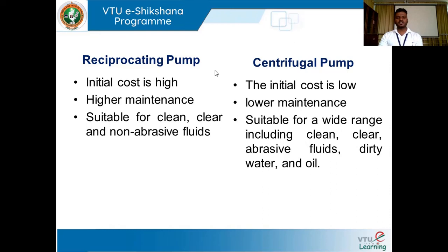The initial cost of a reciprocating pump is high. As mentioned, the tight clearance between the rotating part and the outer body means the fabrication cost or initial cost will be high. The centrifugal pump has a lower initial cost — for a domestic application, a 0.5 HP or 1 HP centrifugal pump can be obtained within 5,000 to 6,000. Reciprocating pump also requires higher maintenance, whereas lower maintenance is sufficient for centrifugal pump.